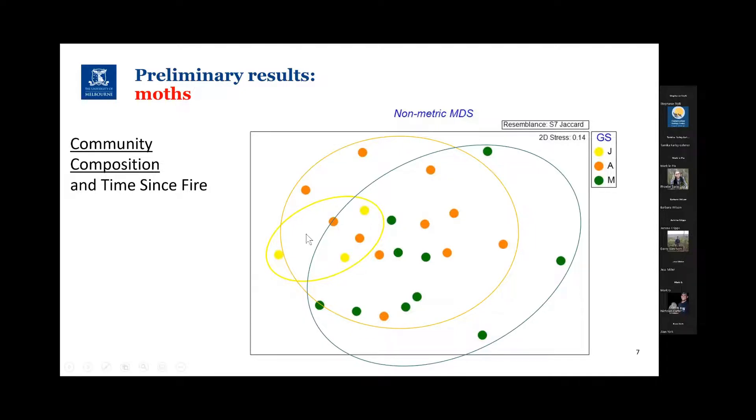I should just point out, I've only shown three of the younger sites on the diagram here. There were two sites that had virtually no moths, which distorted the ordination, but they would normally sit over this side.